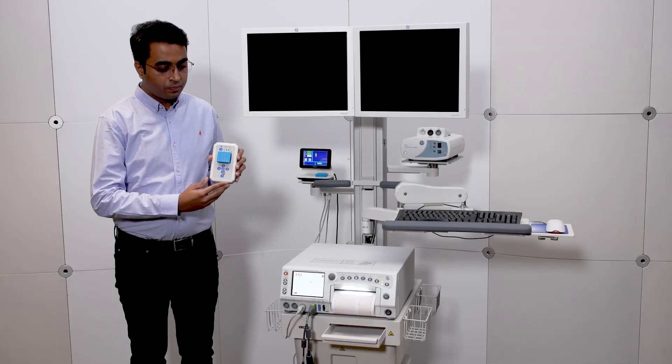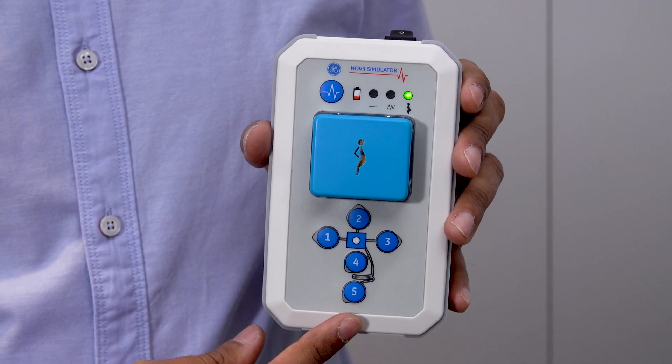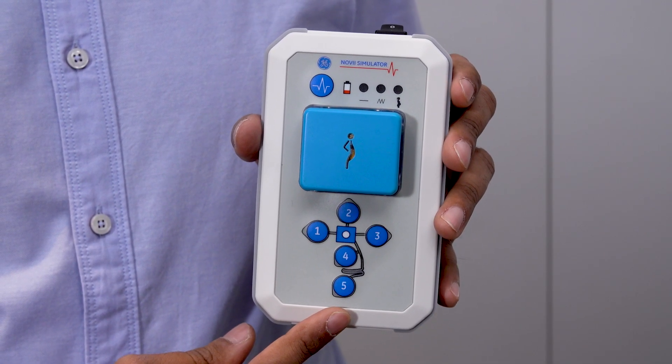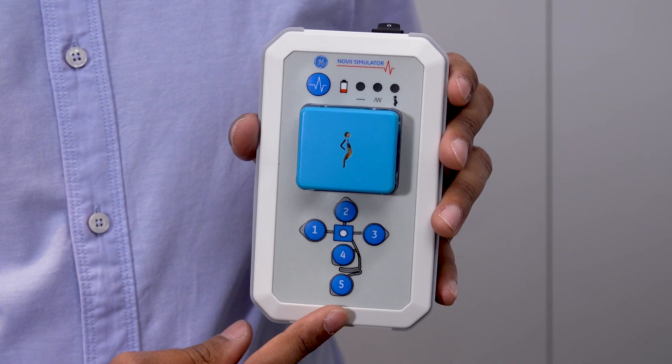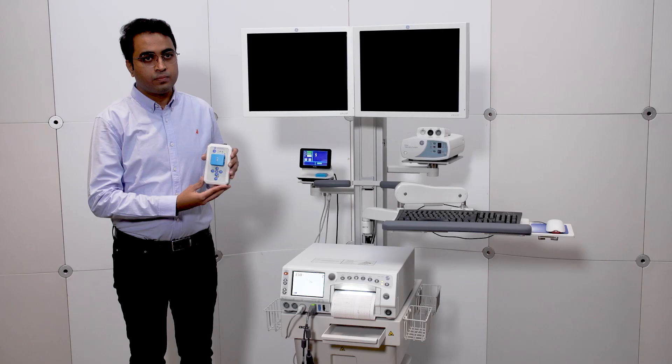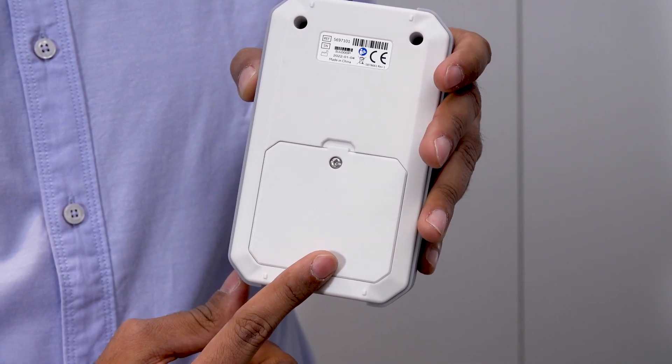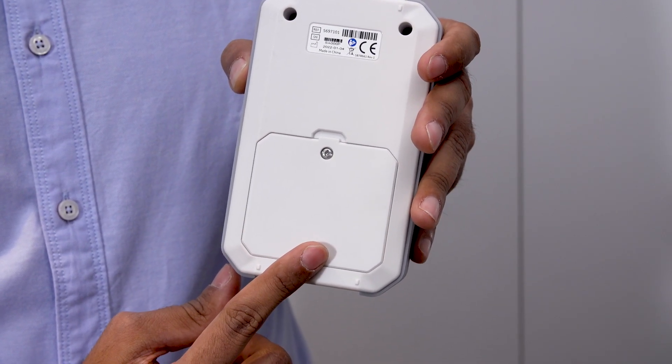Right below the simulator pod clip are the electrode disconnection buttons. Electrode disconnection buttons in Demo mode lets you simulate the electrode disconnection of the Novi wireless patch system. On the backside is the battery compartment, which has two AA alkaline batteries for powering the Novi simulator.